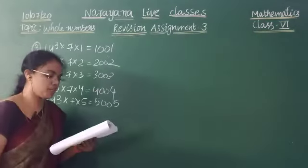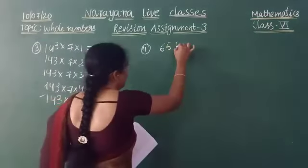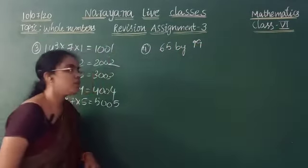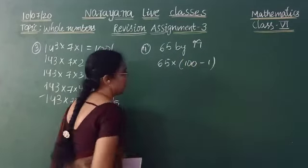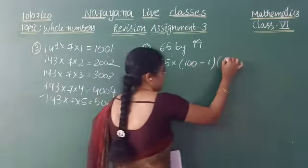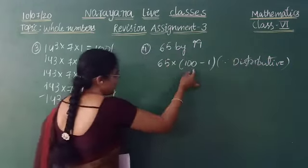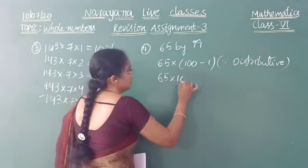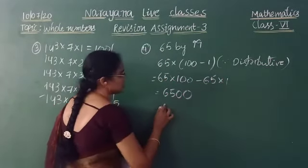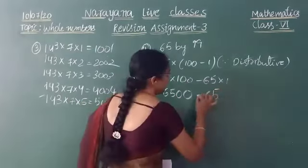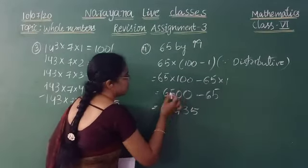The next question is: how would you multiply 65 by 99 mentally? So 65 × 99 — we can write 99 as 100 − 1. Using the distributive property — A × (B − C) = A×B − A×C — 65 × 100 = 6500, minus 65, gives the answer 6435.